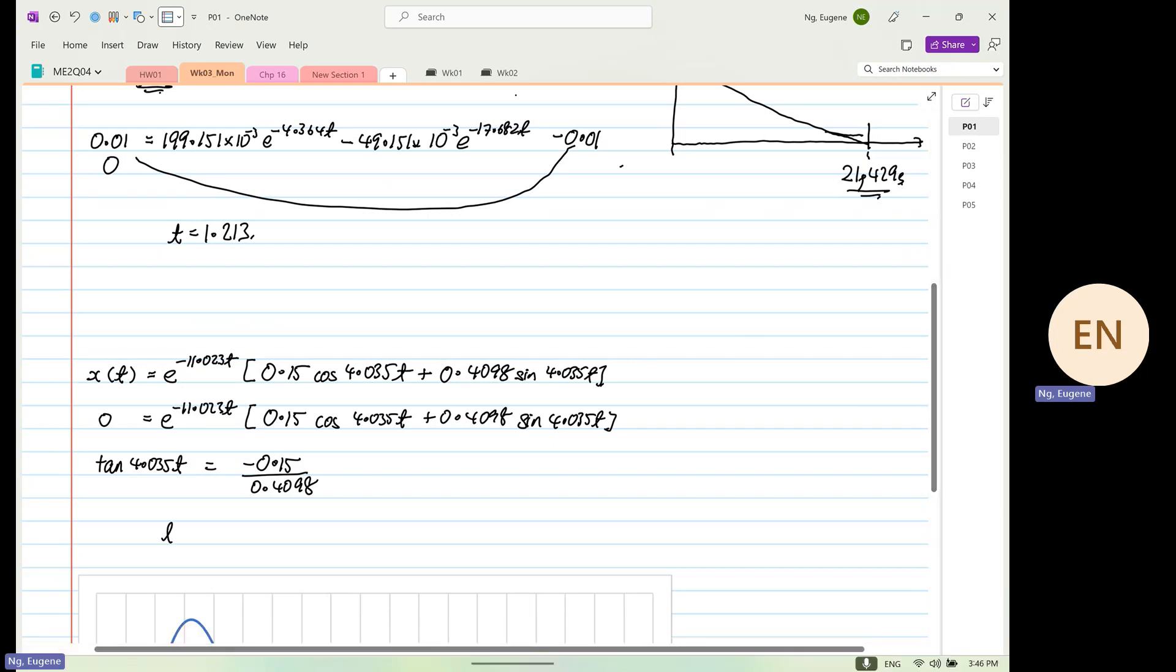So when we were to calculate T, this will be equal to - can you all do it on your calculator and make sure your answers are the same as mine, please? This is important. Minus 0.15 divided by 0.04098, inverse tangent. I get minus 0.3508, and then we have to divide by 4.035. So this is equal to minus 0.08696 seconds. Do you all get this?